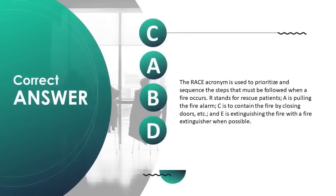The RACE acronym is used to prioritize the steps when a fire occurs: R — rescue patients, A — pull the fire alarm, C — contain the fire by closing doors, E — extinguish the fire with a fire extinguisher when possible.